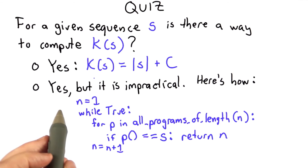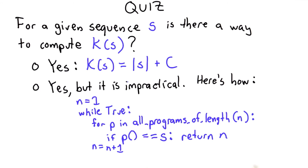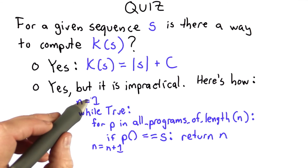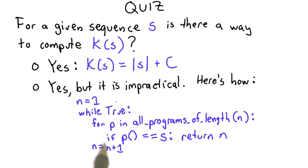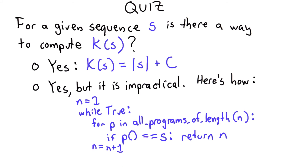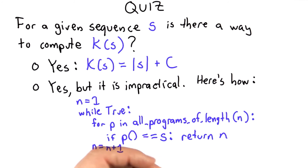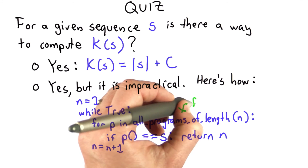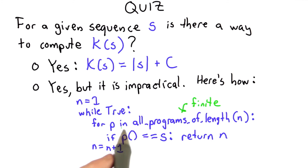The second choice is: yes we can, but it's impractical — here's an algorithm for doing it. We start by initializing n to 1. We have a loop that keeps going until we find the correct value of n, which is the Kolmogorov complexity of the string S. We do that by looping through all the programs of length n. This is a big set, but it's finite, so in theory it would eventually finish. For each program, we execute it and see if it produces S as its output. If it does, that's the result we want.